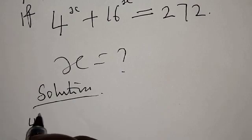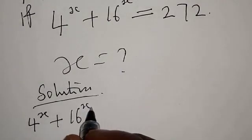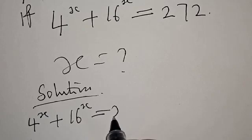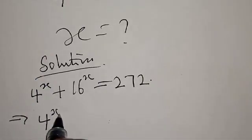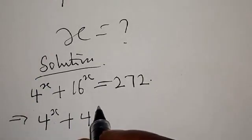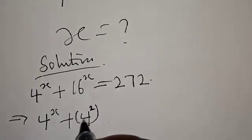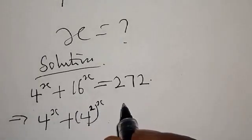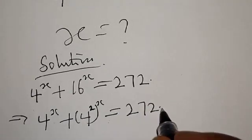Solution: we have 4 raised to power x plus 16 raised to power x is equal to 272. This can be expressed as 4 raised to power x plus 4 squared raised to power x, which is equal to 272.